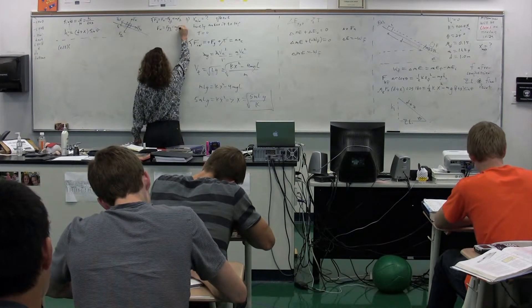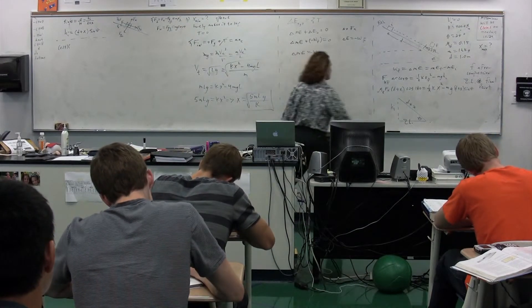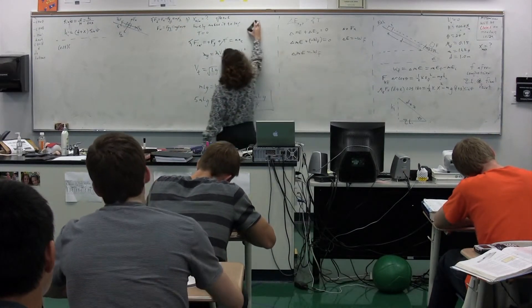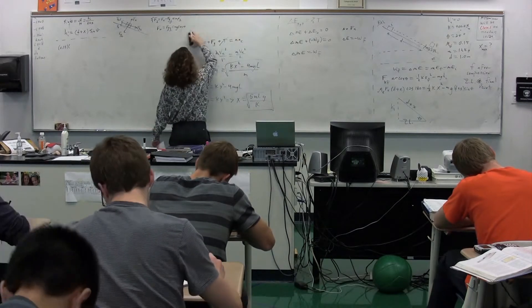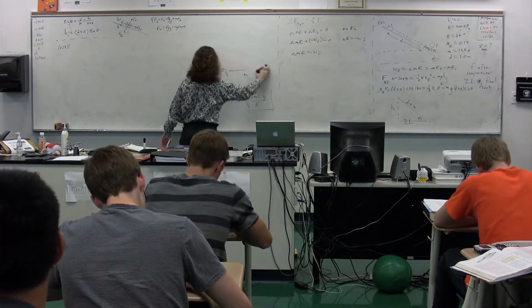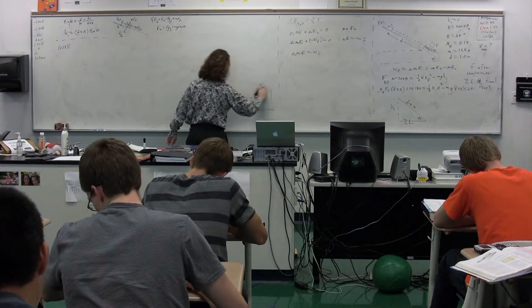Therefore, force normal equals the force of gravity perpendicular, which equals mg times class? Cosine. Cosine theta. That is something you've got to have in your head. The force of gravity perpendicular is mg cosine theta. Okay. Now we can substitute in the force normal.